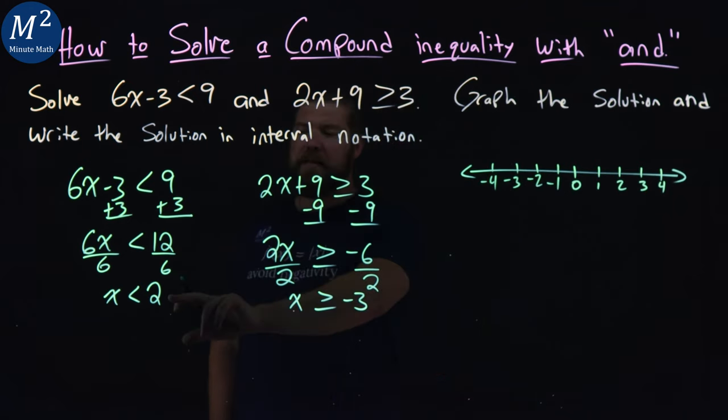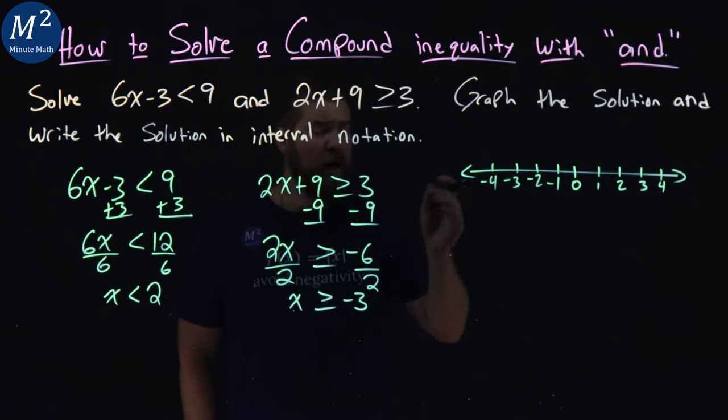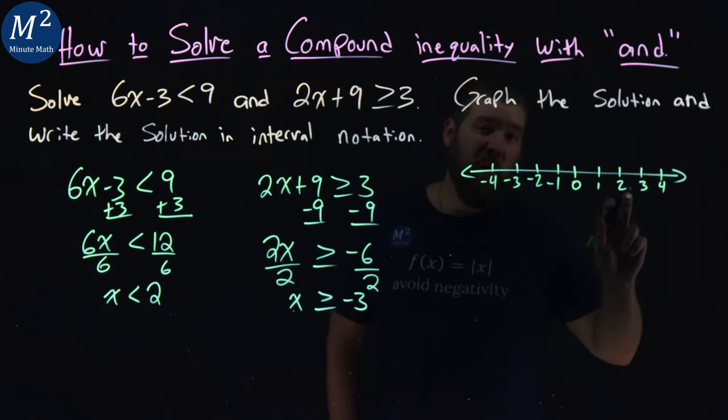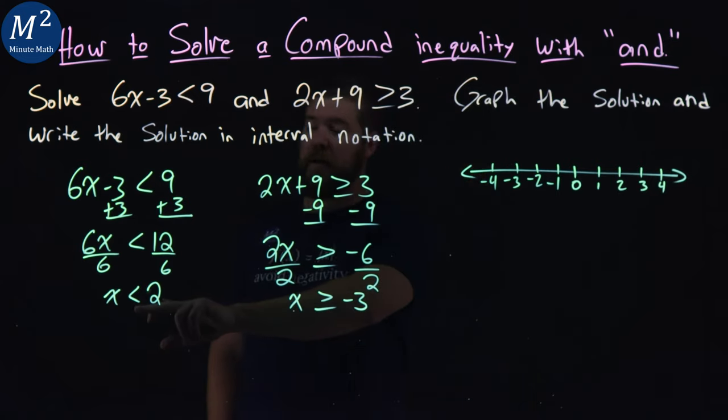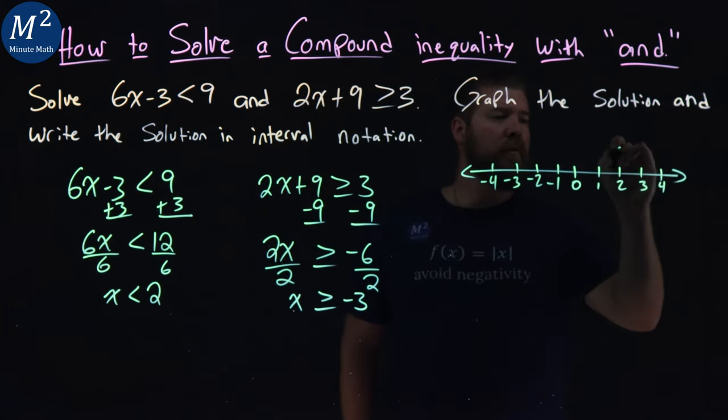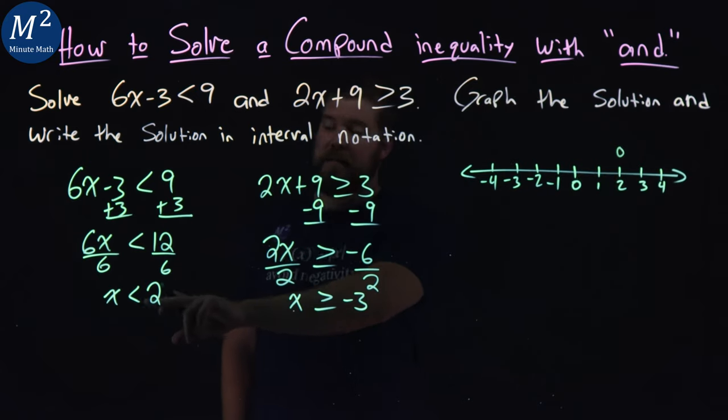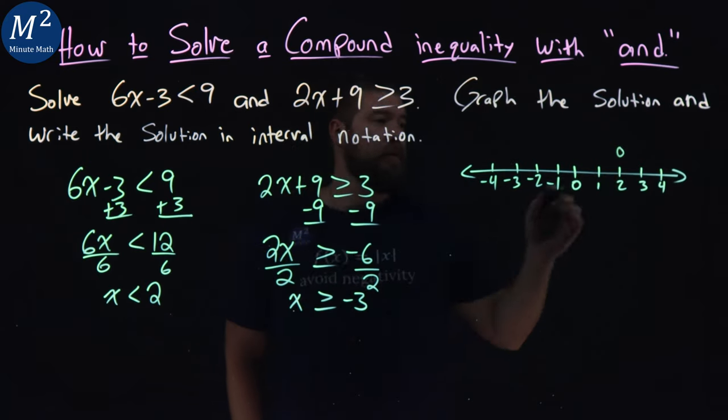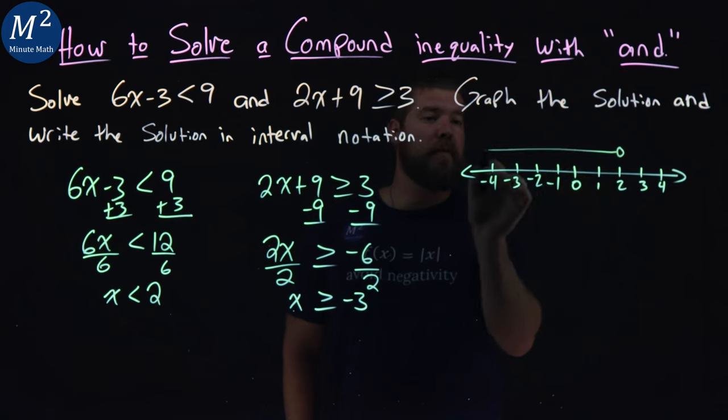I'll start with x is less than 2. If I want to graph that, I start at 2 and put an open circle there because it's not equal to 2, it's just less than 2. Since x is less than 2, I'll put the arrow to the left.